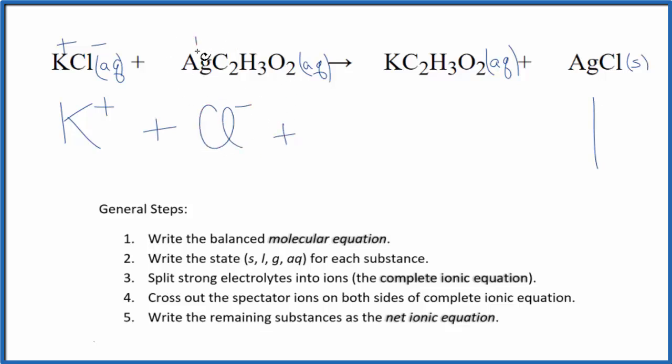Plus silver. It's a transition metal, but it's always 1+. And the whole acetate ion, the whole thing, is 1-, one you memorize or look up on a table of common polyatomic ions. So we have Ag+, then we have the acetate ion. And these are the reactants in our net ionic equation.